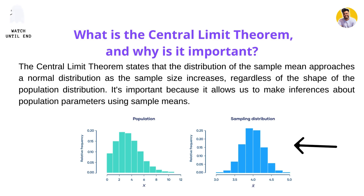We use the central limit theorem because it allows us to make inferences about the population parameters. We can do all kinds of statistical tests that assume the sample or population distribution follows a normal distribution. That's why we use the central limit theorem — it allows us to do all kinds of statistical tests on the normal distribution.